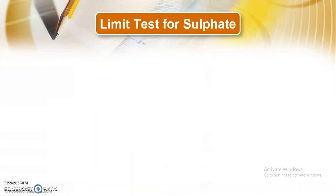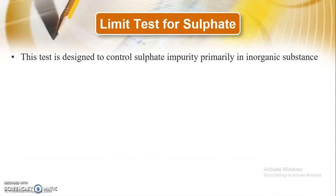So what is the meaning of limit test for the sulphate? The limit test for the sulphate is used to control the impurities of sulphate that are present in inorganic substances. This limit test for the sulphate is designed to control the sulphate impurities occurring in inorganic substances.